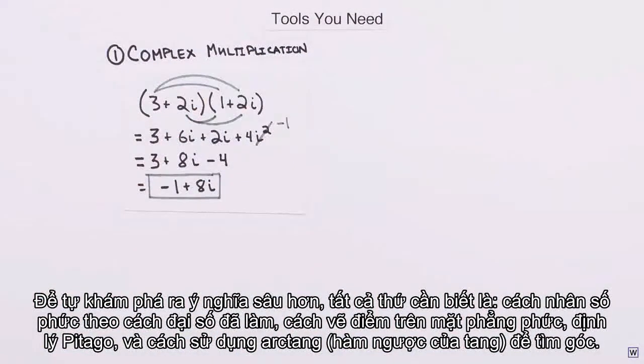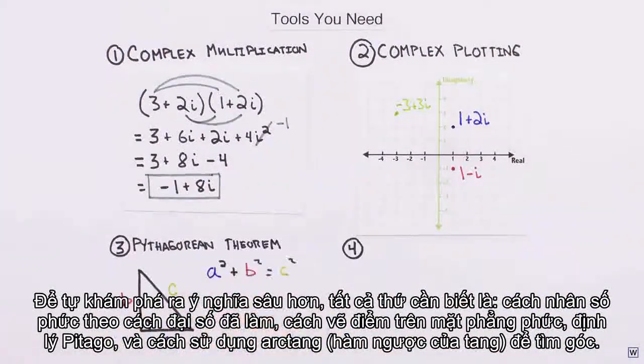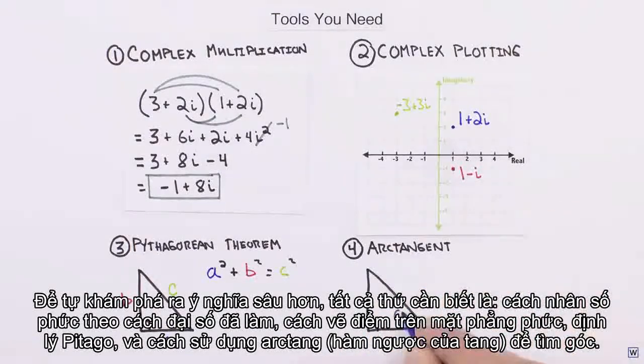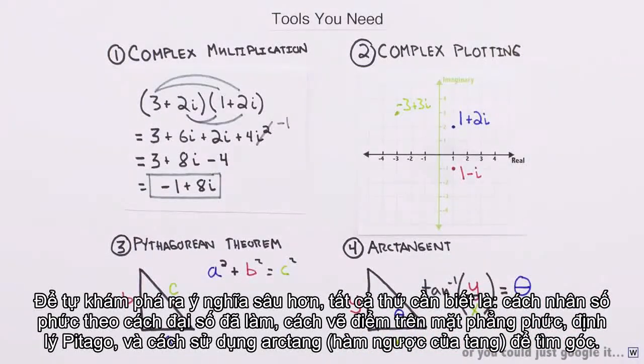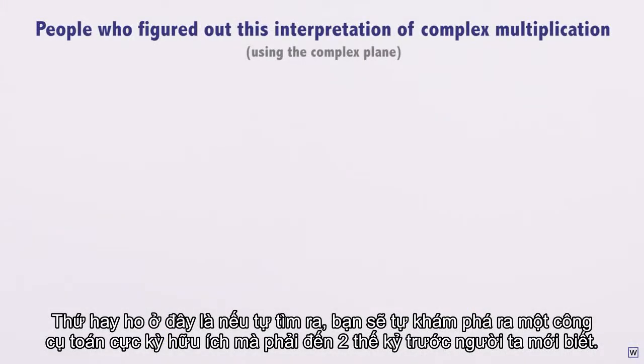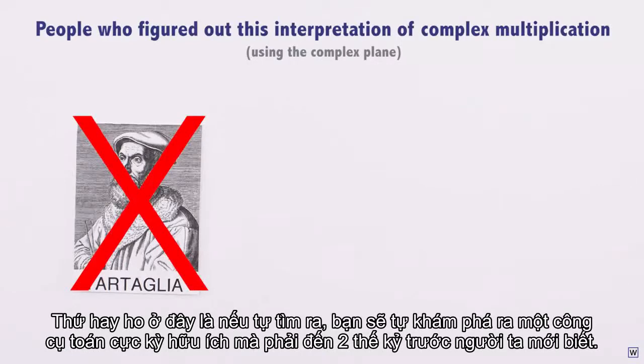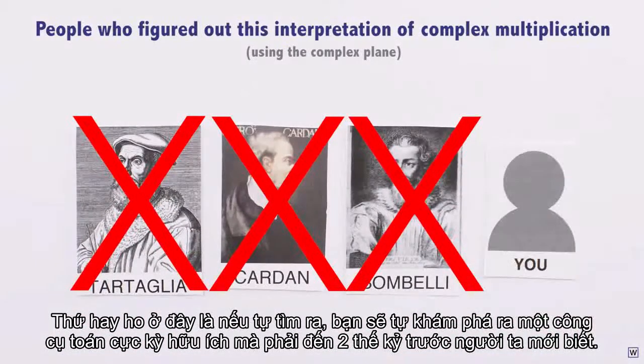How to multiply complex numbers algebraically as we just did, how to plot numbers on the complex plane, the Pythagorean theorem, and finally how to use arctangent to find angles. What's cool here is that if you're able to figure this out, you'll have discovered for yourself a super useful bit of math that was unknown to the smartest mathematicians on the planet until only two centuries ago.